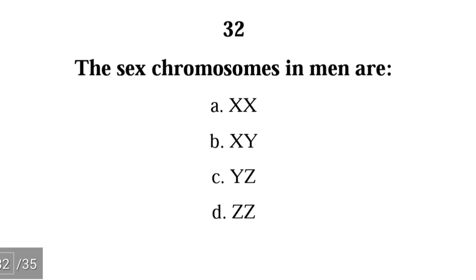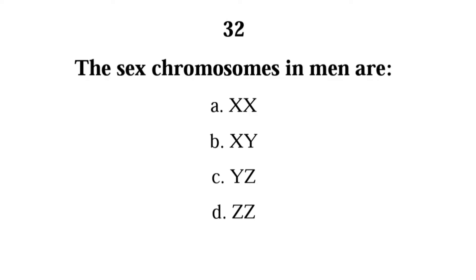Number thirty-two: the sex chromosomes in men are — the correct answer is B. The sex chromosomes in men are X and Y, while the sex chromosomes in women are X and X.